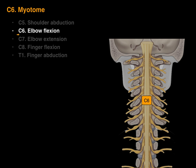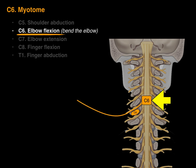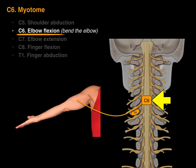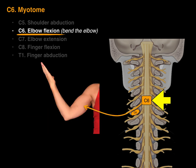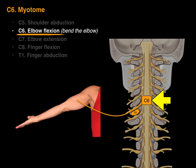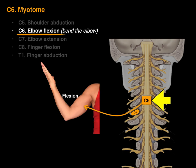Next is elbow flexion for the C6 myotome, which means bending the elbow. When we look at the C6 spinal cord level and the C6 vertebra, the nerve courses above the vertebra and goes to muscles that will bend the elbow — elbow flexion, C6 myotome.